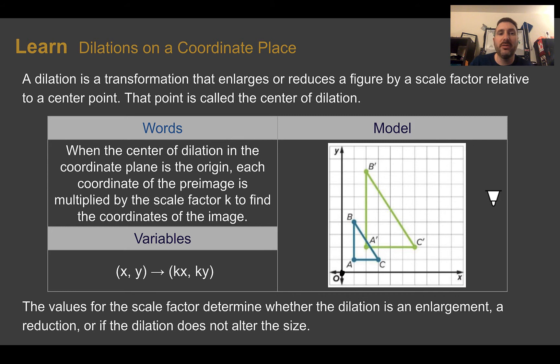So when the center of dilation in the coordinate plane is the origin, each coordinate in the pre-image is just multiplied by the scale factor, or K, to find the coordinates of the image. So here we can see if we take our coordinates and multiply them by K, we're going to get new coordinates. So let's just look at B, for example. Originally, B is at 1, 4. Now, B is at 2, 8. So not only did we double the size, we doubled the distance that it was away from the origin. And then whatever value we used for that scale factor determines whether that dilation is an enlargement, a reduction, or if it didn't affect the size at all.